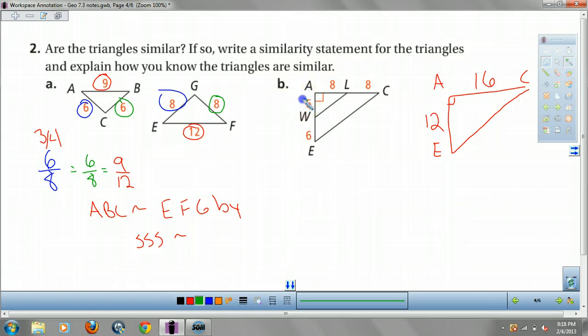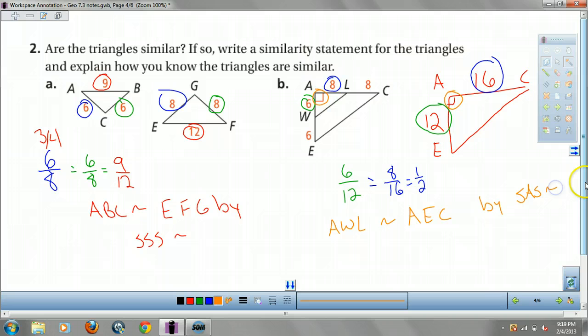So, let's see if we can't find some stuff. Well, I'm going to start off by finding my proportions. 6 over 12 is one of them. 8 over 16 is the other one that I might be able to find out. And yes, those are congruent because they all equal one-half. So, I have two sides. Right here, I have an angle, don't I? So, A, W, L similar to A, E, C by your side, angle, side similarity theorem.